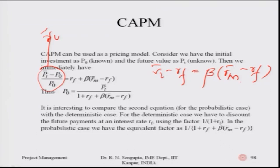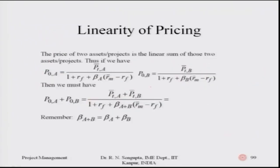So P_0 is given by P-bar_T divided by a denominator that gives the concept of a discounted rate of return. It is interesting to compare the probabilistic case with the deterministic one: for the deterministic case we discount at interest rate R_F using the factor (1 + R_F), while in the probabilistic sense we have an equivalent factor in the denominator. The price of two assets or projects is a linear sum of the individual prices.